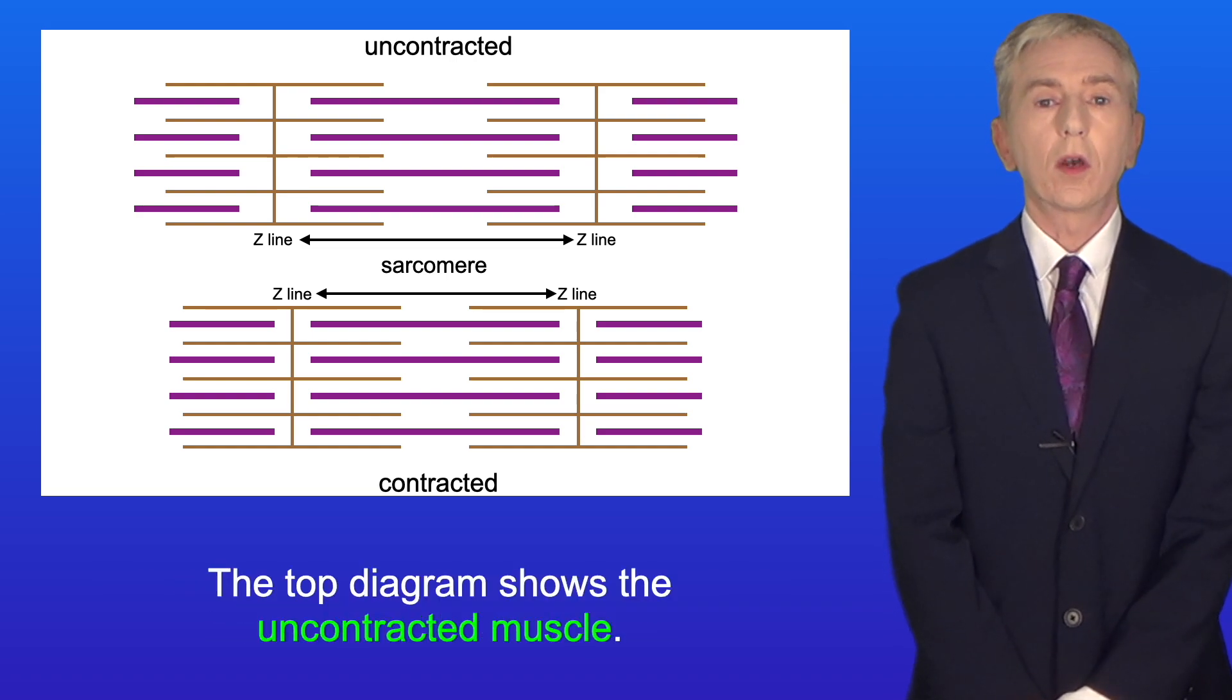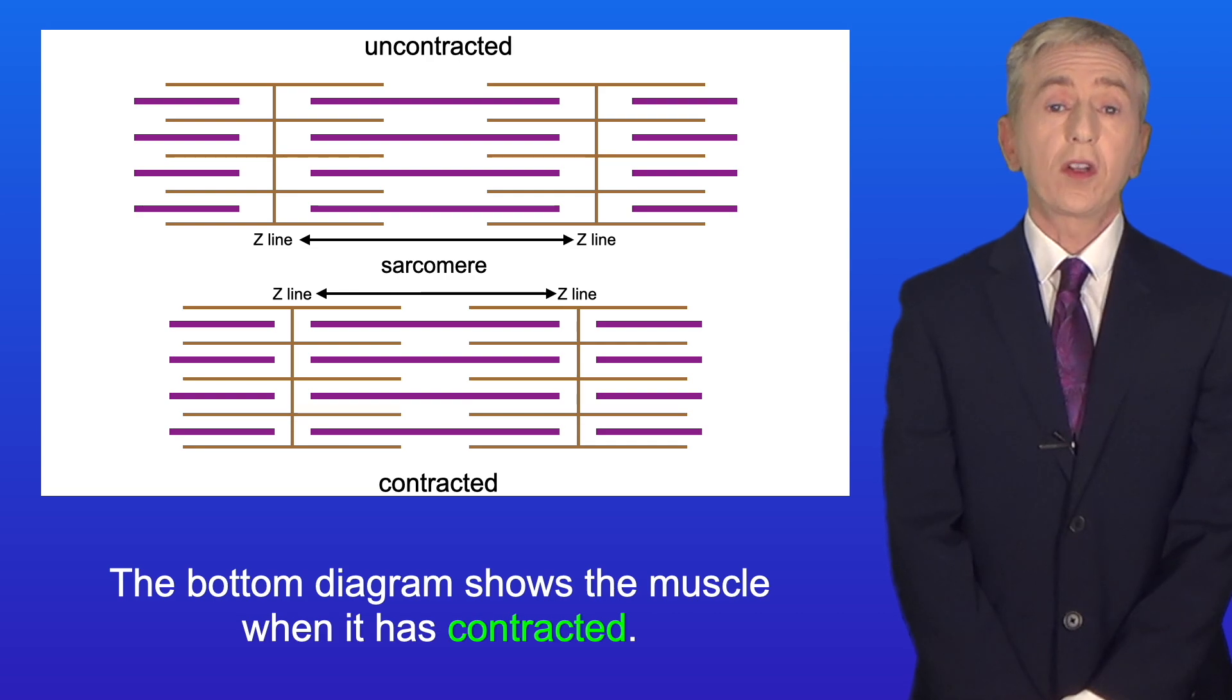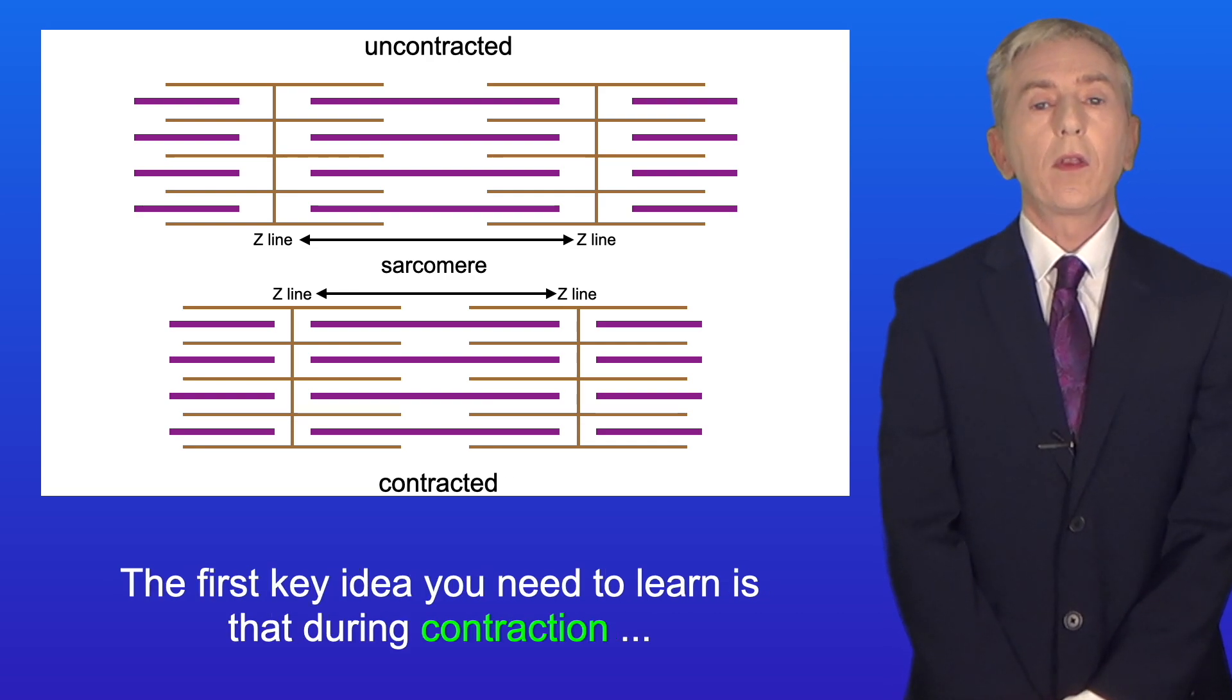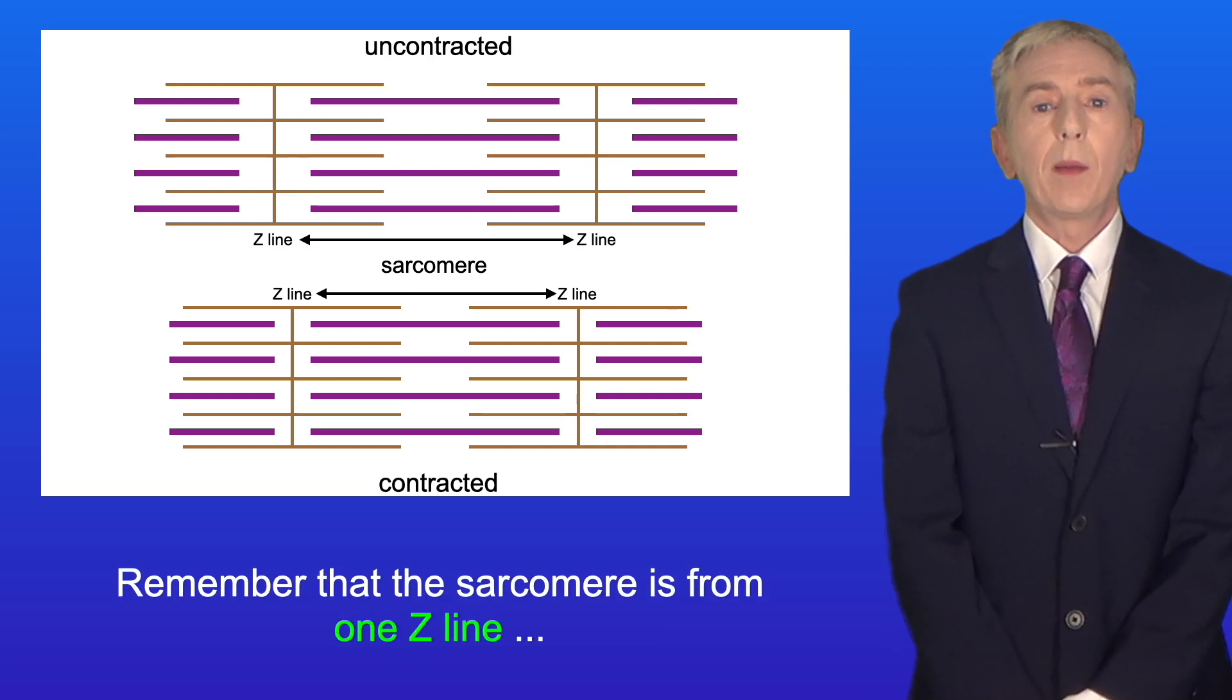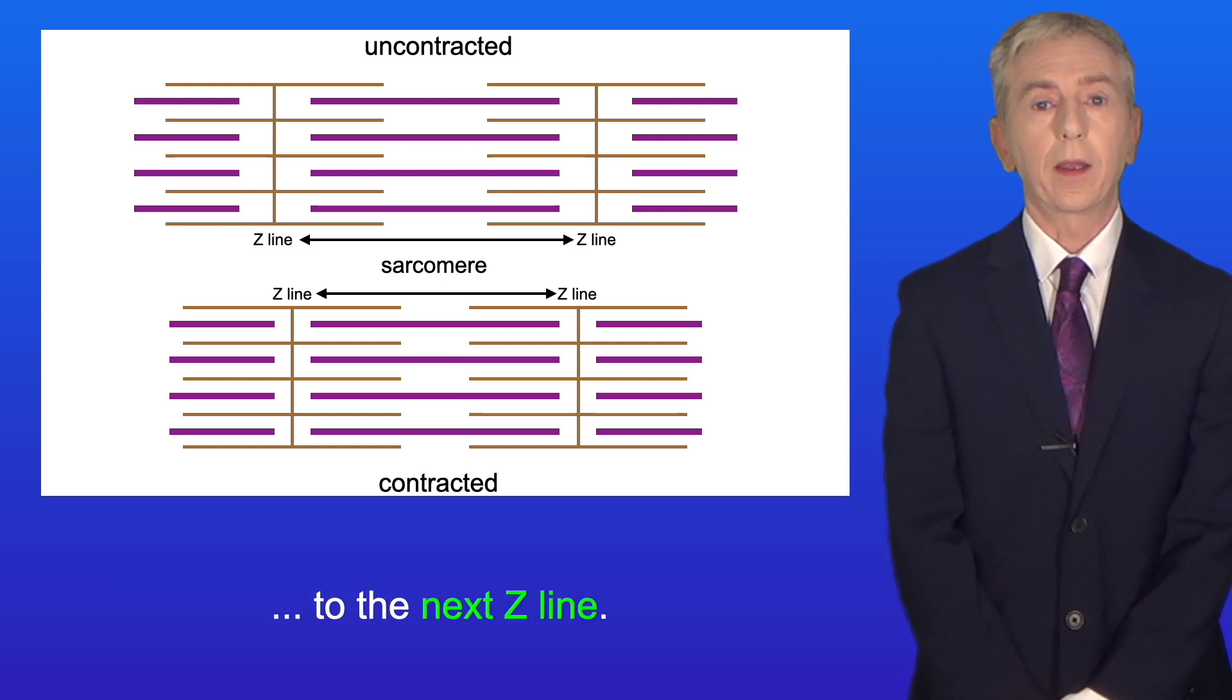The top diagram shows the uncontracted muscle and the bottom diagram shows the muscle when it's contracted. Now the first key idea you need to learn is that during contraction the sarcomere shortens. And remember that the sarcomere is from one Z line to the next Z line.